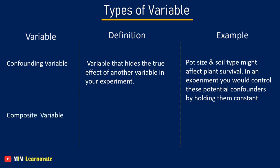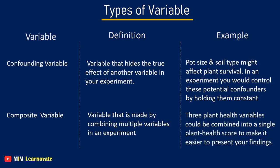Composite variable. A variable that is made by combining multiple variables in an experiment. These variables are created when you analyze data, not when you measure it. For example, the three plant health variables could be combined into a single plant health score to make it easier to present your findings.